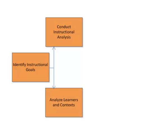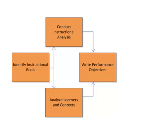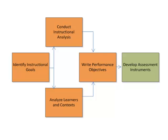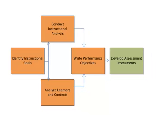The next step is to analyze the learners and their contexts — understanding who the learners are, the context in which they'll be doing the learning, and the context in which they will actually use the skills. It's important to know where learners are so you can build from that starting point. After these two analyses, the next step is to write performance objectives — specific statements of what learners will be able to do when they complete the instruction. Then, develop assessment instruments that measure the learner's ability to perform those objectives.